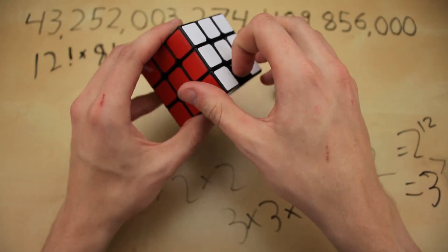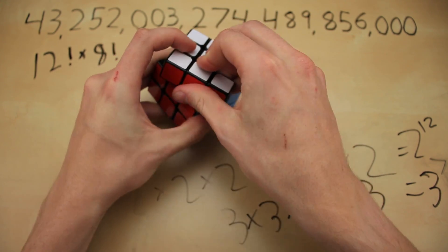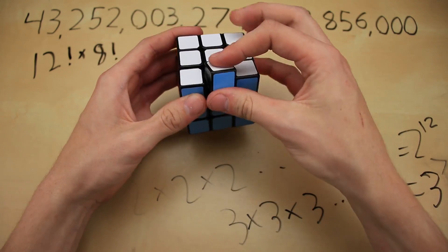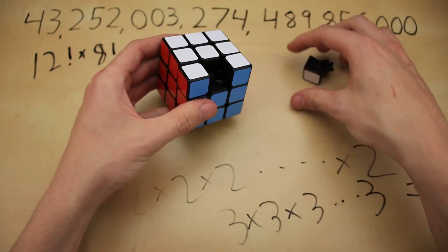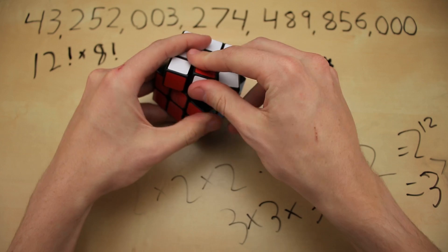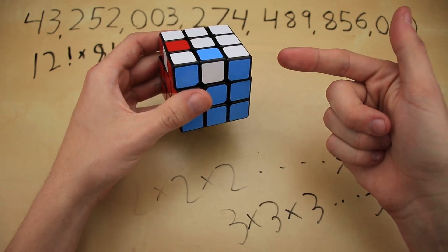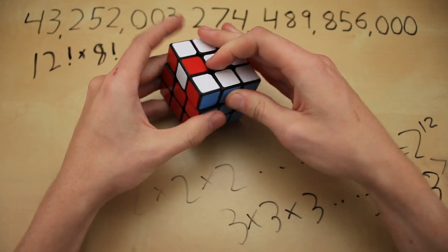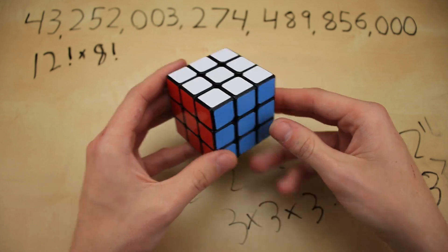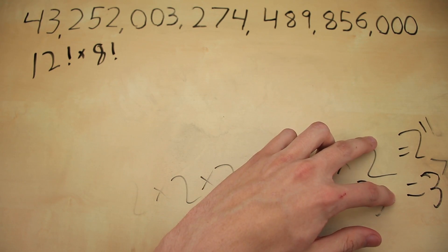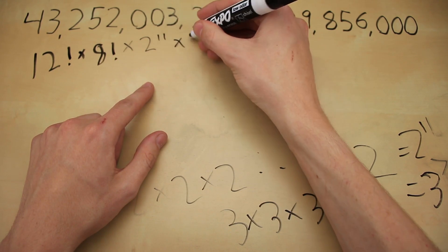The same principle also applies to edges. You have free choice over what you want to do with all of your first 11 edge pieces, but once you get to the 12th edge piece, there's only one possible way to put it in. If you put it in the wrong way, the cube would then become unsolvable. So we have to change 2 to the 12 down to 2 to the 11. Now that we've worked out that problem, we can multiply these two numbers onto our final calculated value: times 2 to the 11 for the orientation of our edges, and times 3 to the 7 for the orientation of our corners.